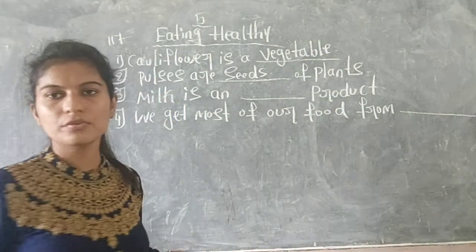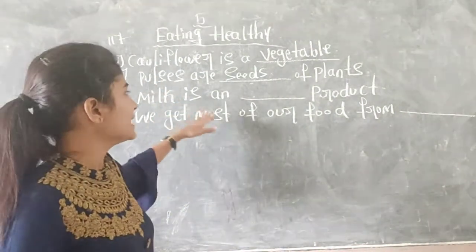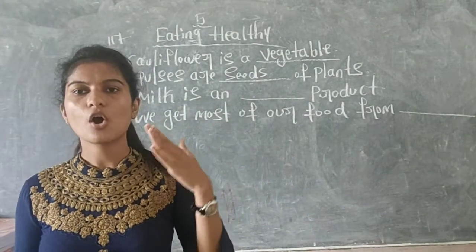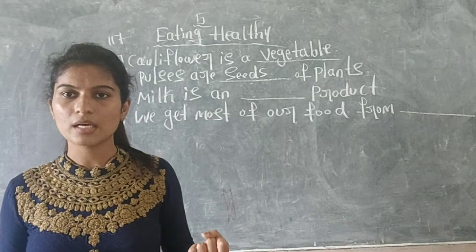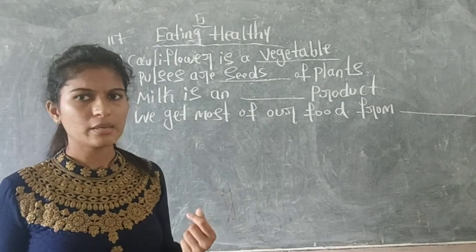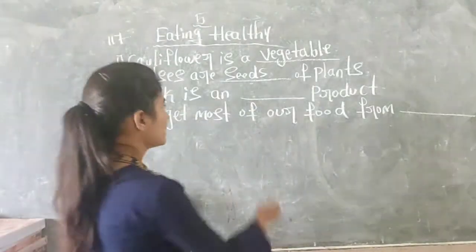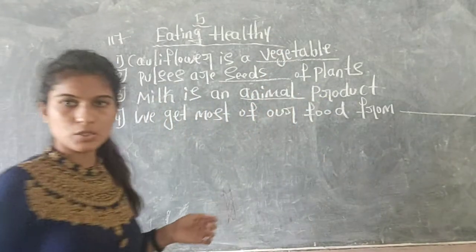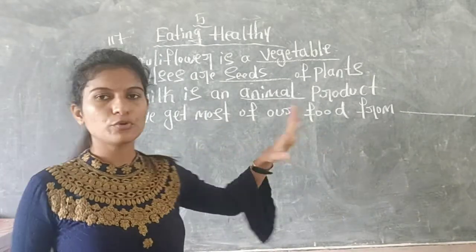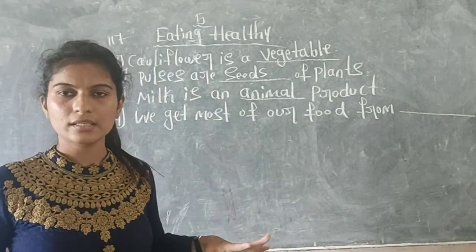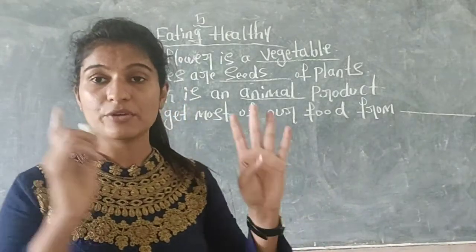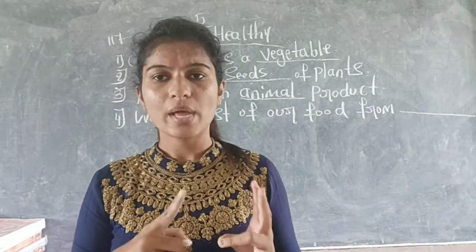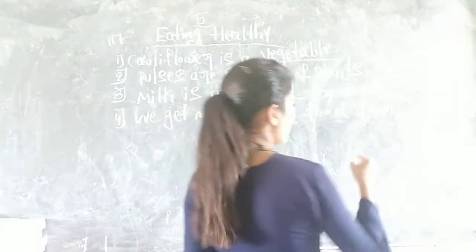Pulses are seeds of plants. The next one: milk is a blank product — is it an animal product or a plant product? We get milk from animals, so milk is an animal product. The fourth one: we get most of our food from blank — we get fruits, cereals, pulses, and vegetables from plants, so the answer is plants.